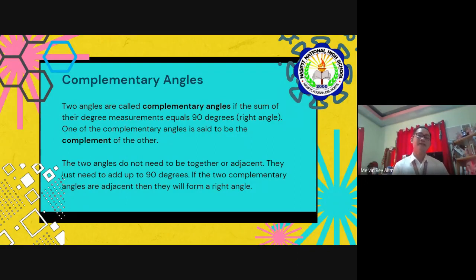Complementary angles. Two angles are called complementary angles if the sum of their degree measurements equals 90 degrees or right angle. One of the complementary angles is said to be the complement of the other.